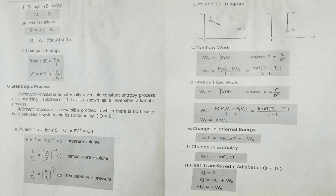Steady flow work is the negative integration of V dP from 1 to 2, where V equals C over P raised to K. Integrating gives steady flow work equal to K times quantity P2V2 minus P1V1 all over 1 minus K, or K times MR times change in temperature all over 1 minus K. Steady flow work equals K times non-flow work.